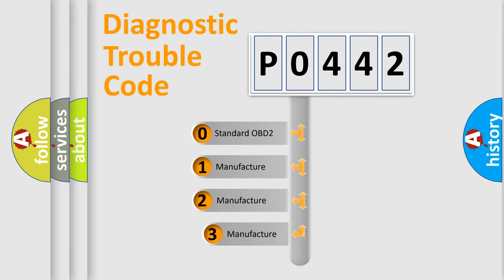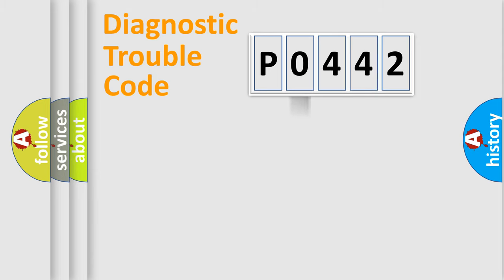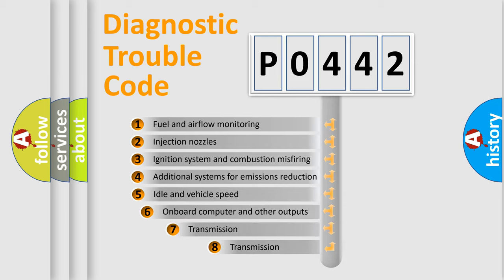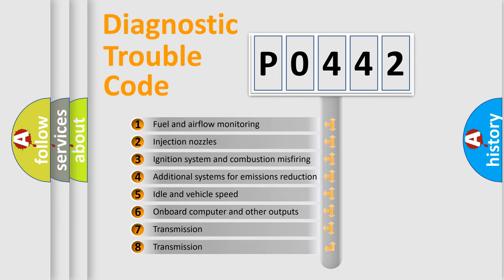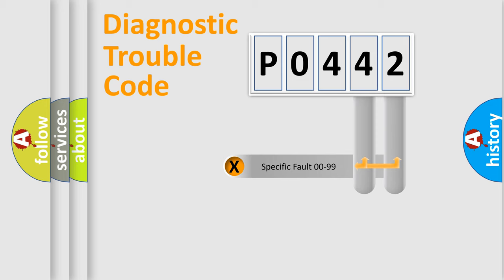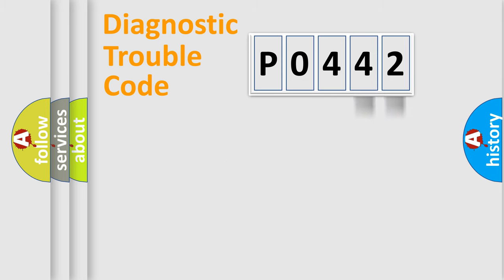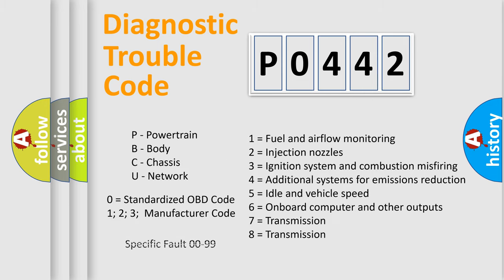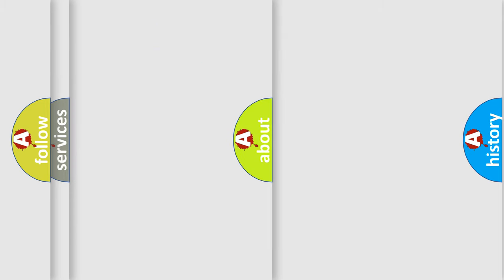If the second character is expressed as zero, it is a standardized error. In the case of numbers 1, 2, or 3, it is a more manufacturer-specific expression of a car-specific error. The third character specifies a subset of errors. This distribution is valid only for the standardized DTC code, and only the last two characters define the specific fault within the group.